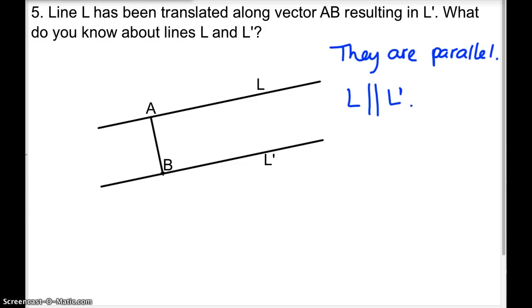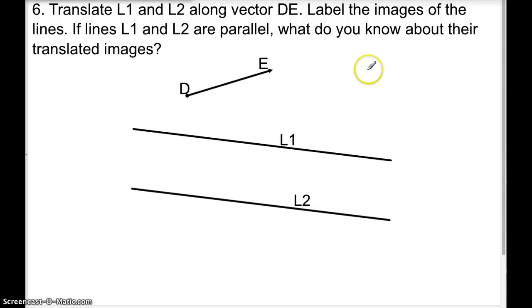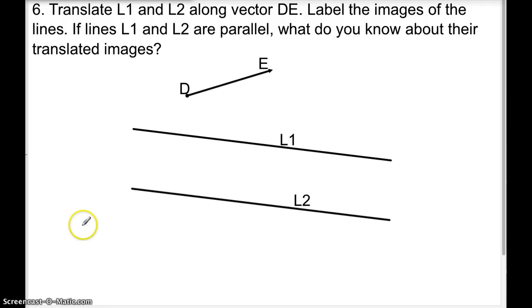Lastly, number six: translate line one and line two along vector DE, which shows we're moving those lines up and to the right a little bit. Label the images. If line one and line two are parallel, we can already answer: as long as you translate them the same distance and direction, line one prime and line two prime will also be parallel.